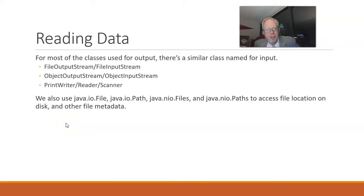And we have some ancillary classes that we use as well. So java.io.file, java.io.path, those have been with us since the early days of Java. And we can use that to represent a file on disk, its location, and its metadata. And we need that location and metadata to be able to write to or read from a file.